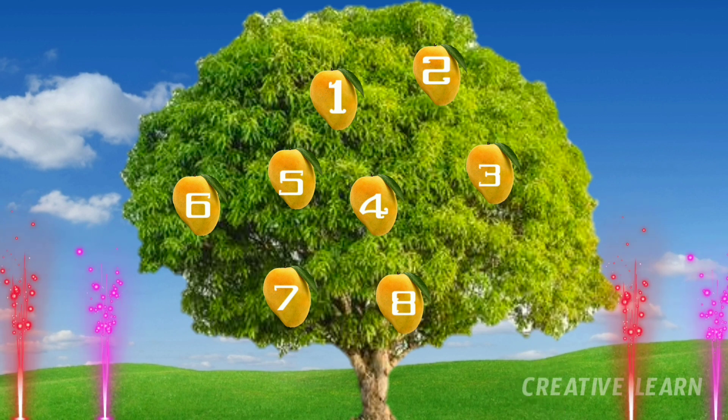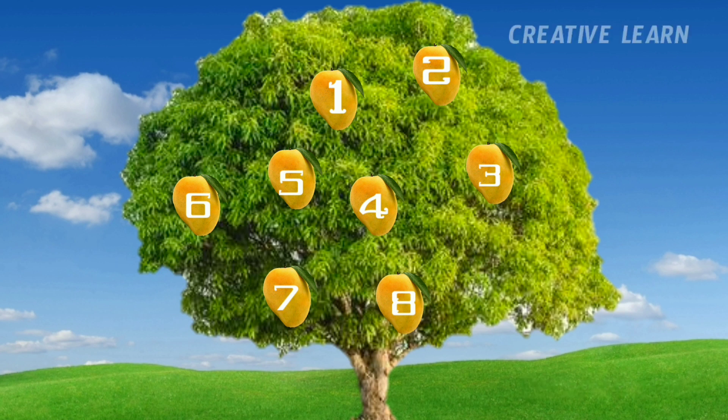One mango fell down. Then how many mangoes are left there? One, two, three, four, five, six, seven and eight.